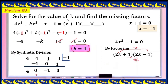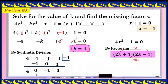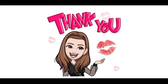Therefore, k = 4 and the missing factors are (2x + 1) and (2x - 1). The complete factorization is: 4x³ + 4x² - x - 1 = (x + 1)(2x + 1)(2x - 1). That's all for today, thanks for watching, bye!